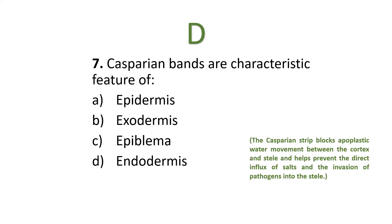Next: Casparian bands are a characteristic feature of — epidermis, exodermis, epiblema, or endodermis? The correct option is endodermis. The Casparian strips block apoplastic water movement between the cortex and stele, helping prevent direct influx of salts and invasion of pathogens into the stele. Endodermis is the innermost layer of cortex in land plants.